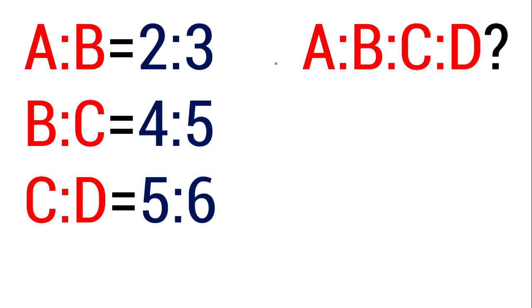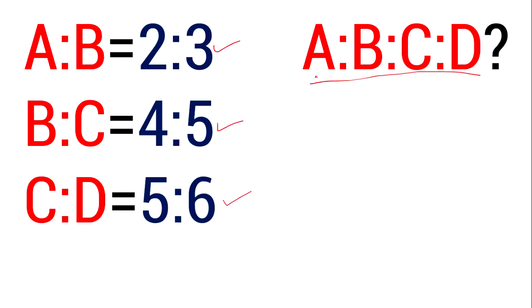For example: if A is to C is 4 is to 5, and C is to D is 5 is to R. Now the problem: if A is to B is equal to 2 is to 3, B is to C is equal to 4 is to 5, C is to D is equal to 5 is to 6, then find the value of A is to B is to C is to D.